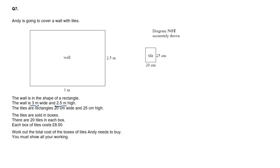First up, it will be really useful if we convert these into centimeters because the size of the tile is in centimeters. So I'm going to write this. 3 meters is 300 centimeters by multiplying by 100. And this here is 250 centimeters like this.